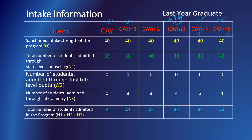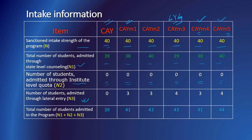These figures represent the sanctioned capacity as approved by the approving agency. The number of students admitted through state level counseling are indicated, and in this example the institute level quota is zero — meaning there is no provision for admission at the institute level quota. Suppose there is a provision for lateral entry students; ITI students can enter into the program in the third semester or the second year. The total number of students admitted in the program is N1 plus N2 plus N3.